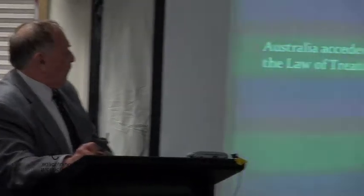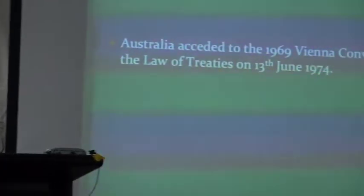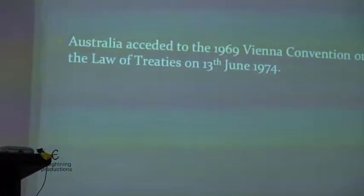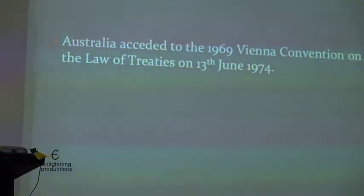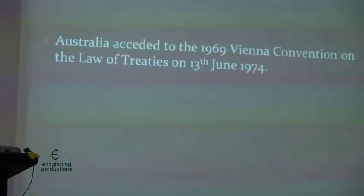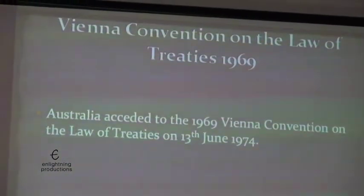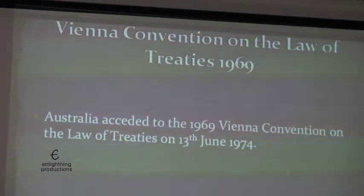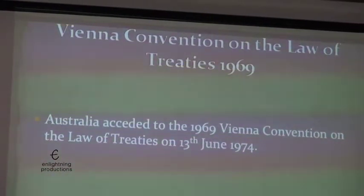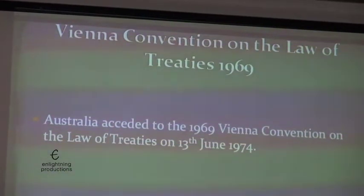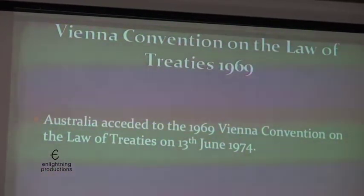The lesson from that is that if you make a treaty with them, there's just no way in the world they're going to keep it. Australia acceded in 1974 to the 1969 Vienna Convention on the Law of Treaties. A convention is kind of like a treaty — it's where a lot of nations agree on how to proceed. This convention was made in Vienna and it has definitions, procedures and how to conduct your treaties.